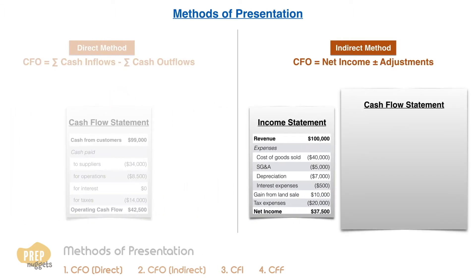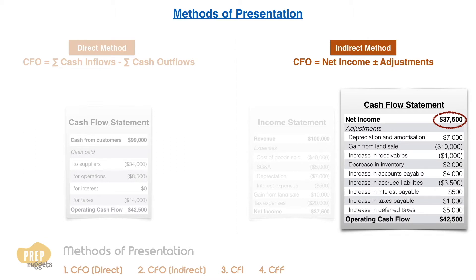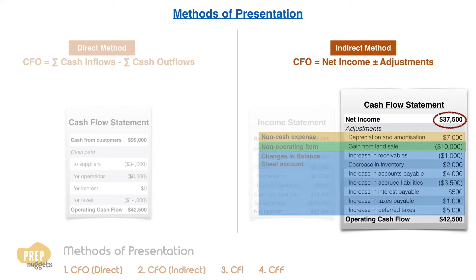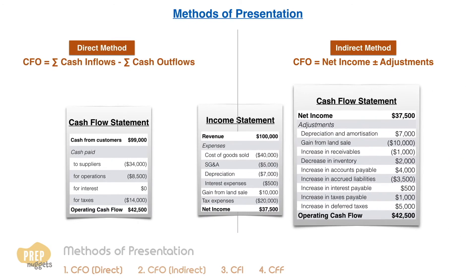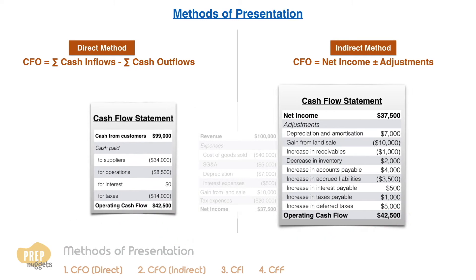Under the indirect method, the net income from the income statement is converted to operating cash flow. This is done by making adjustments for transactions that are non-cash but affect net income. Such adjustments include eliminating non-cash expenses like depreciation and amortization, non-operating items like gains and losses, and changes in balance sheet accounts resulting from accrual accounting events. Total cash flow from operating activities is exactly the same under both methods.